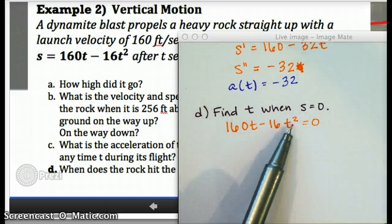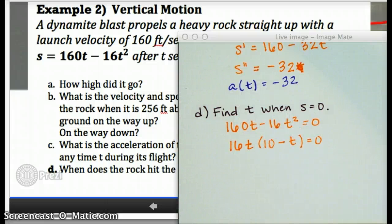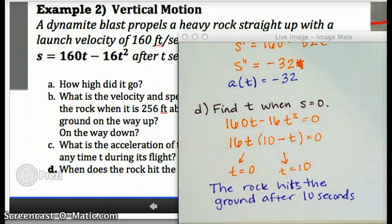To solve this quadratic equation, since there are only two terms, I'm going to take out a GCF. And then I can set each of these factors equal to 0, and we see that there are actually two solutions. What does that mean? Well, it means that the rock was on the ground at time 0. That makes sense. It started there. And then it's on the ground again at time 10, which means this must be the time when it hits the ground after flying. And that's your final answer.